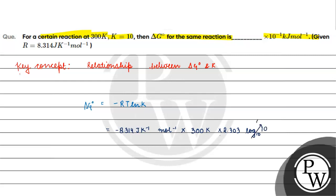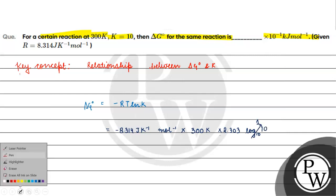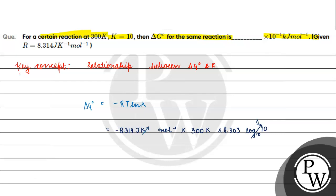The value of K is 10, so log base 10 of 10 equals 1, and kelvin cancels out. This gives us minus 8.314 into 300 into 2.303, which equals minus 5744.142 joule per mole. To convert to kilojoules, we multiply by 10 raised to the power minus 3.